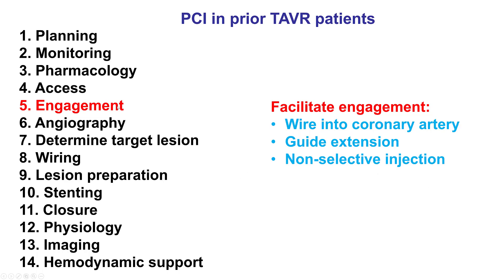How can engagement be facilitated? The first option is to use different catheters. Sometimes advancing a guidewire into the coronary artery can help act as a rail to advance the catheter. Guide extensions can be very useful. And sometimes non-selective injections might suffice to determine the coronary anatomy.